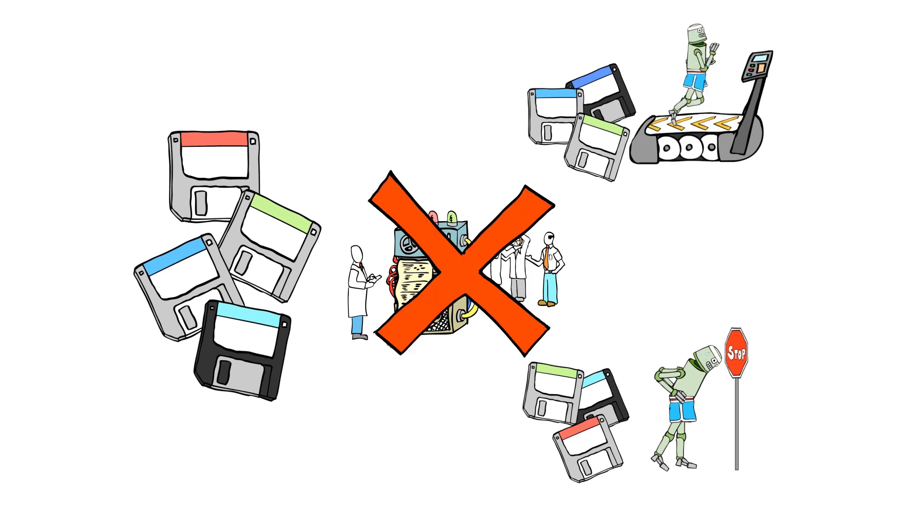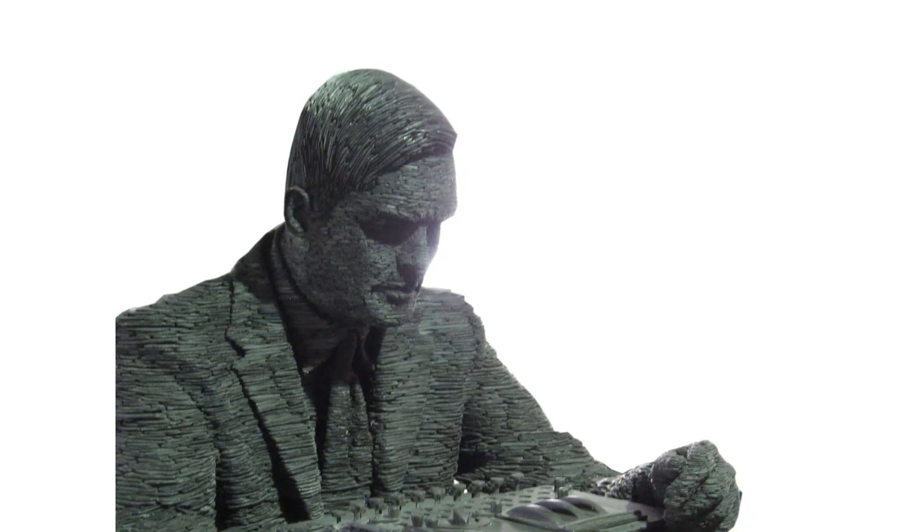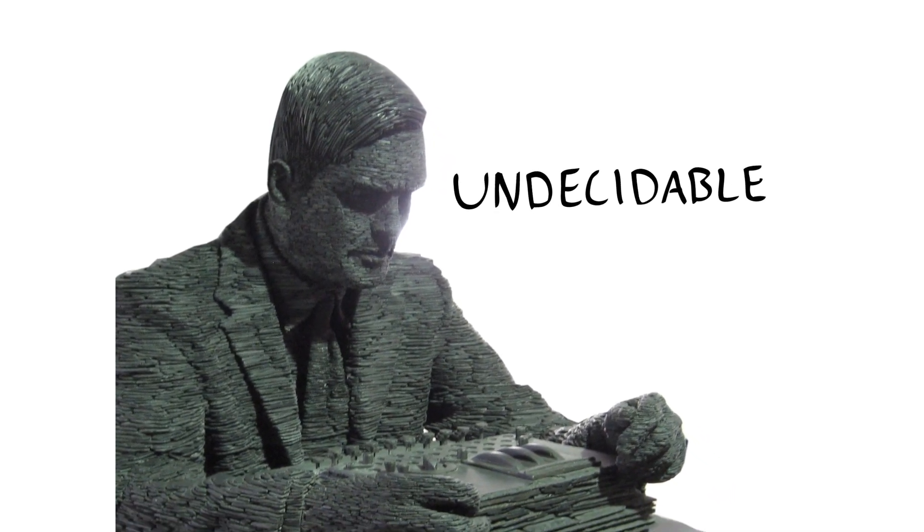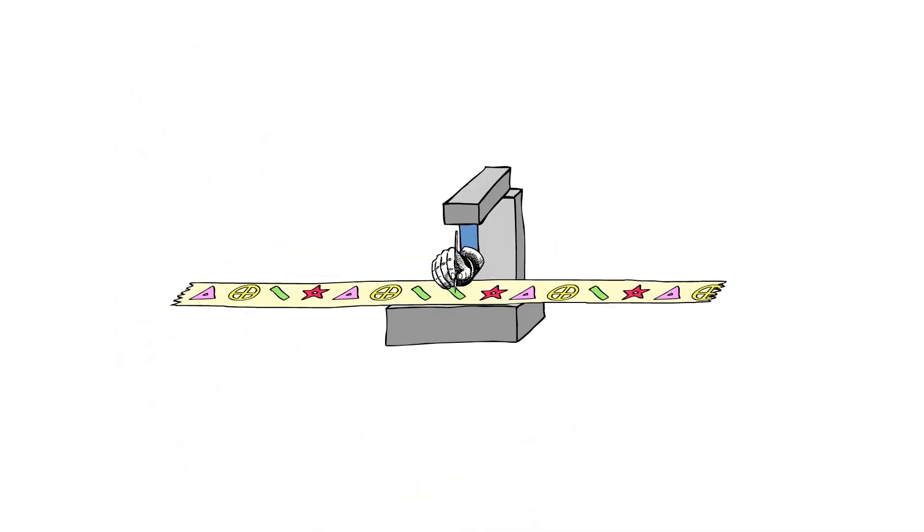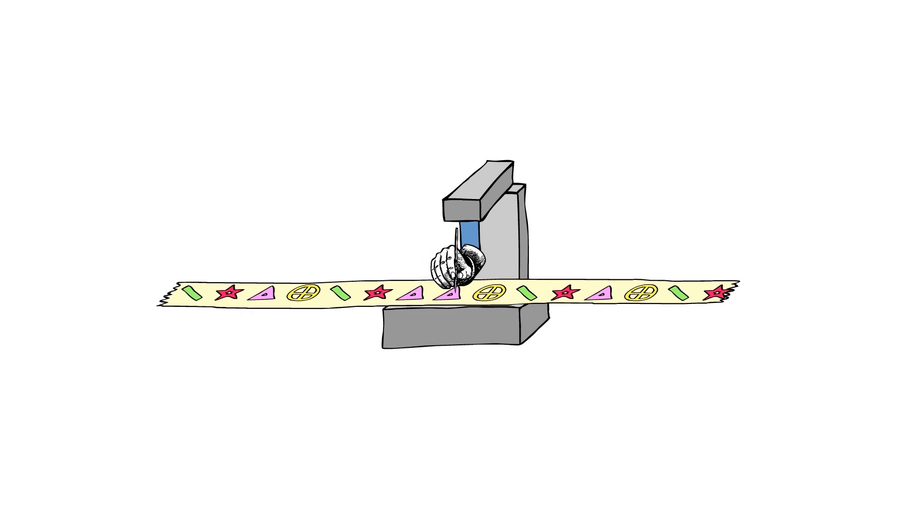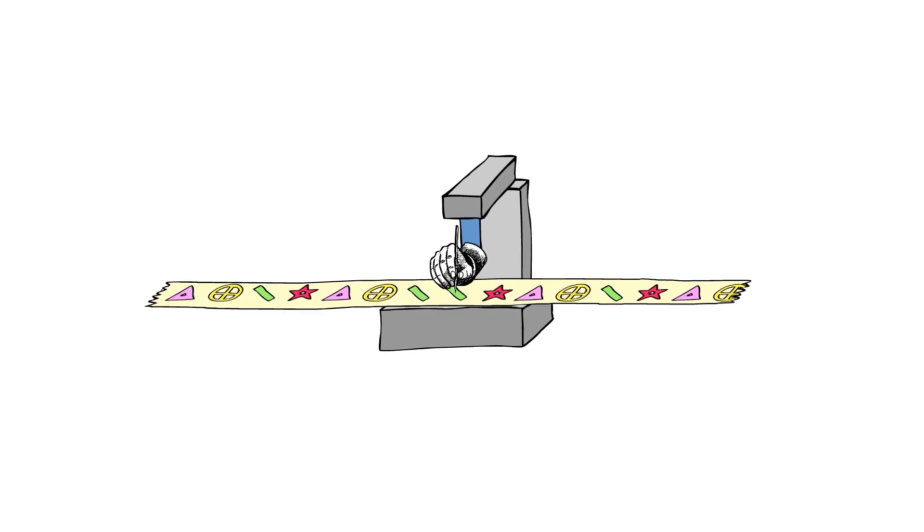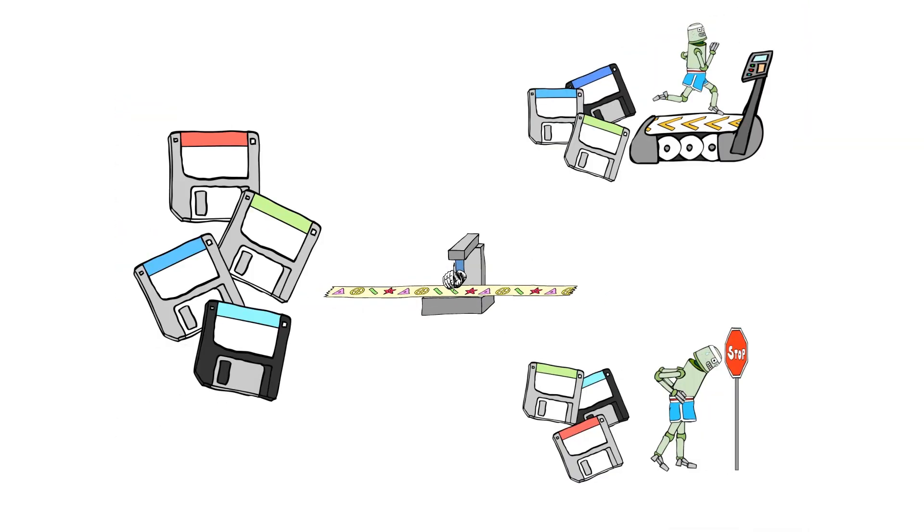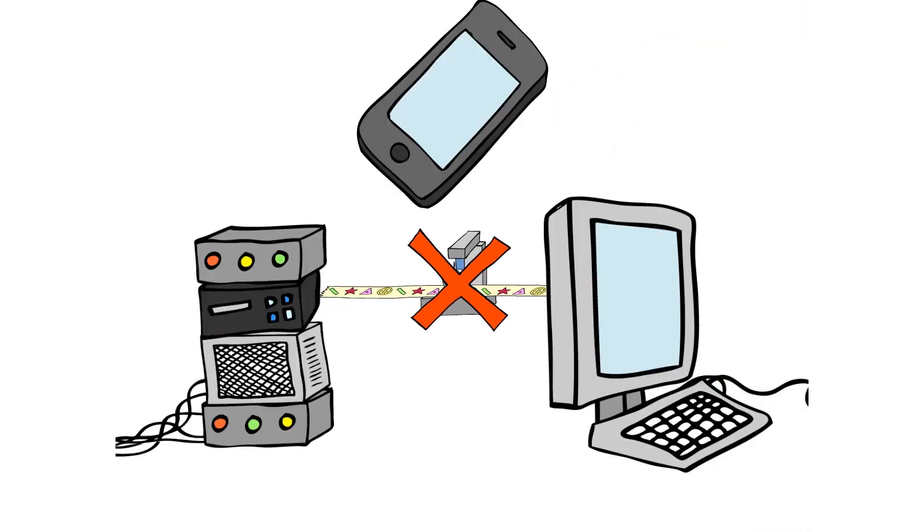This is known as the halting problem, and in 1936 British mathematician Alan Turing proved that it was undecidable, a question no computer could ever answer. To do that he had to invent the idea of a Turing machine, a theoretical device that reads instructions off of paper tape and computes according to a few simple rules. Turing showed that Turing machines could never solve the halting problem. And since every modern computer is basically a Turing machine, they can't either.